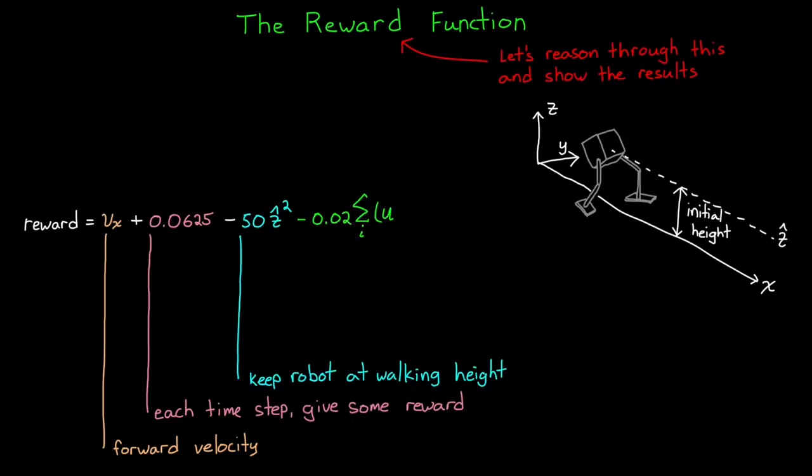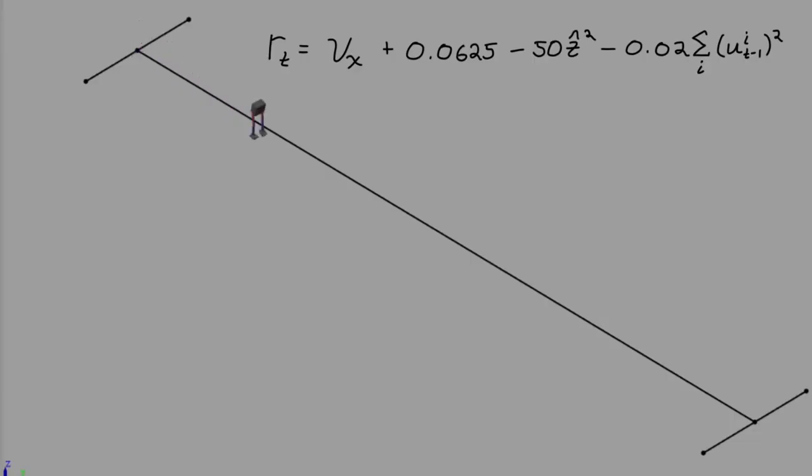We'd like both legs to do equal work and not to overuse the actuators with a lot of jittering. So to fix this, we can reward the agent for minimizing actuator effort. This should reduce extra jittering and balance the effort so that each leg has a share of the load. Let's check out this trained agent. Okay, we're getting really close here. This is looking pretty good. Except now we have one final problem.